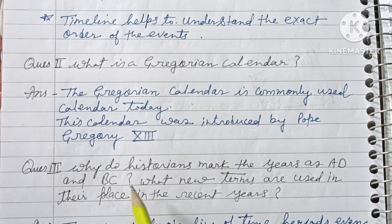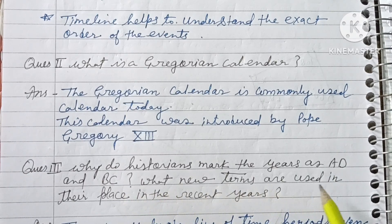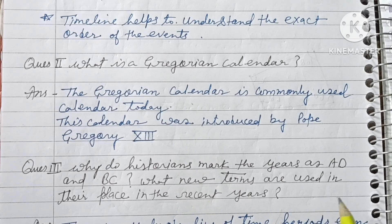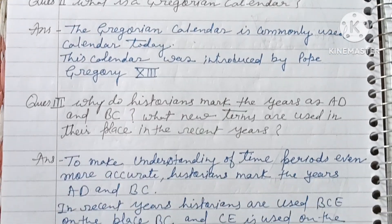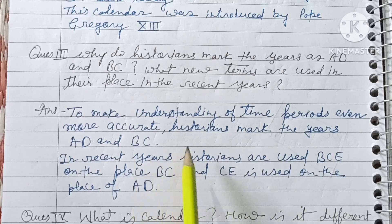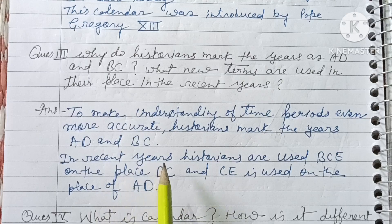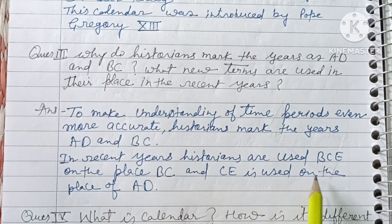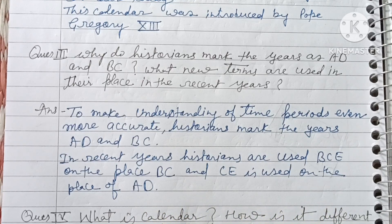Question 3: Why do historians mark the year as AD and BC? What new terms are used in place of these? Answer: To make understanding of the time period even more accurate, historians use AD and BC. In recent years, historians use BCE in place of BC, and CE is used in place of AD.